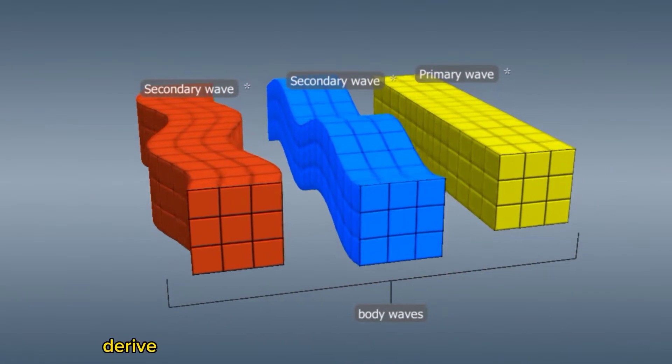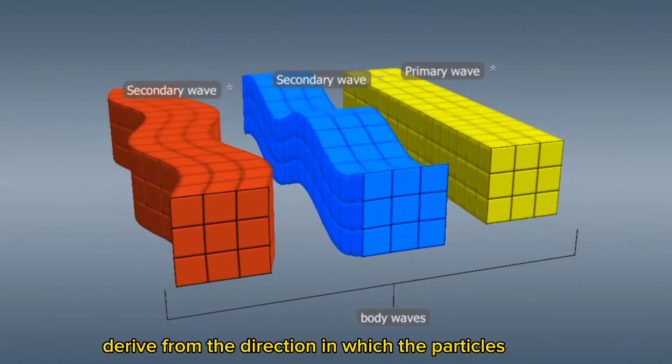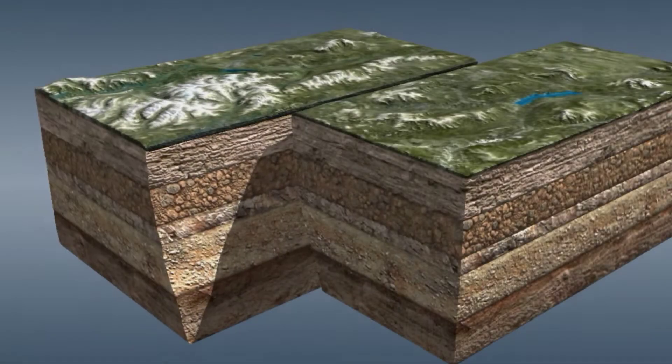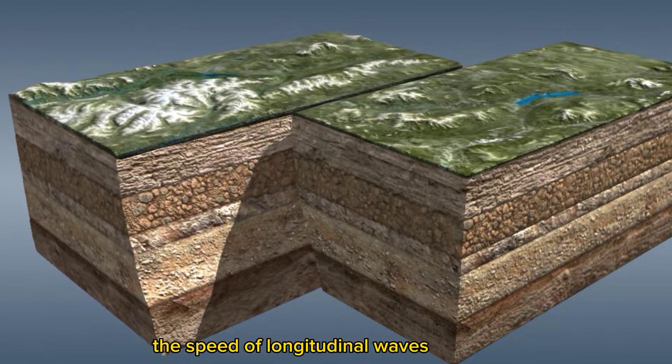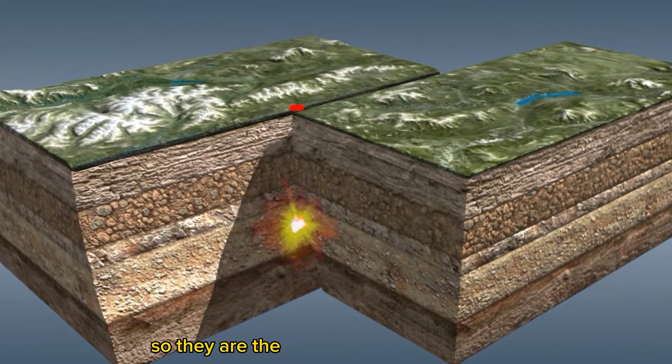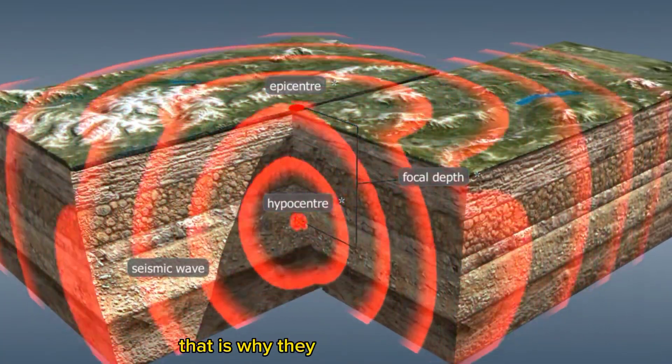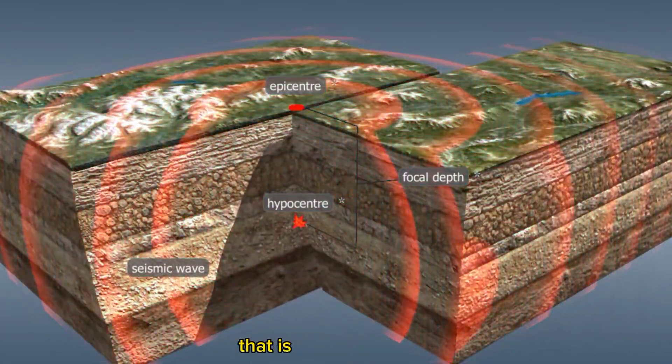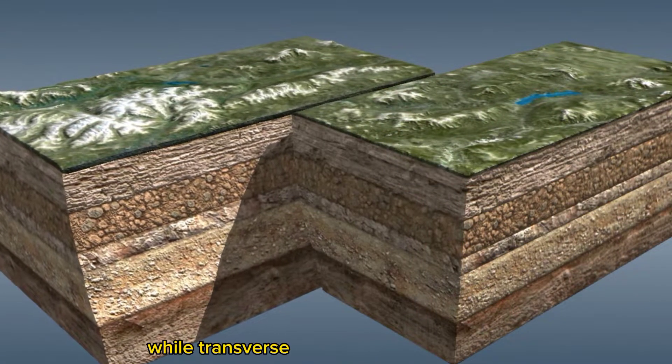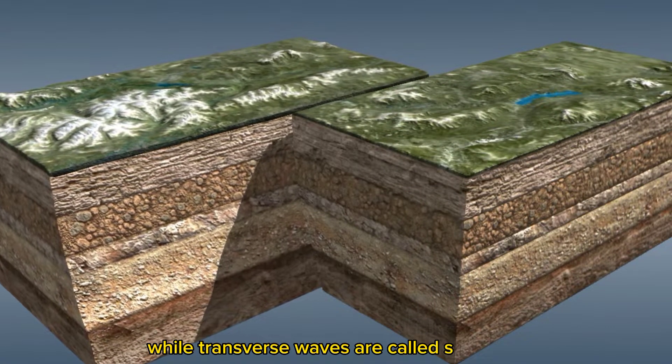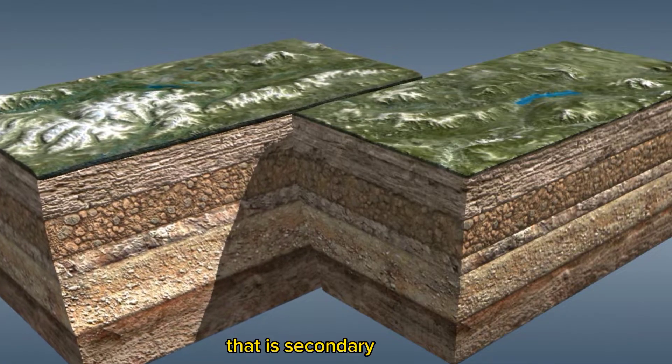Their names derive from the direction in which the particles move. The speed of longitudinal waves is higher, so they are the first waves to be detected by instruments. That is why they are called P waves, or primary waves, while transverse waves are called S waves, or secondary waves.